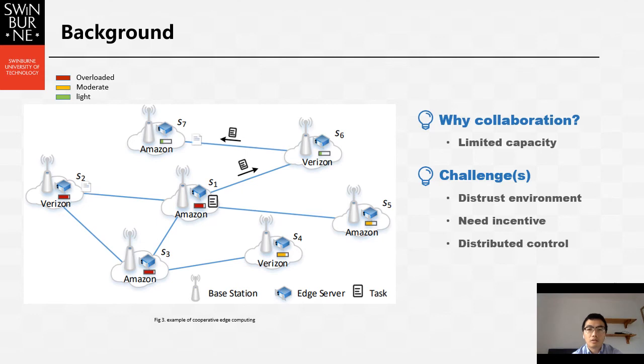Without proper incentive, they refuse to contribute their resources. In addition, they are in a distrust environment. If randomly offloading computation tasks to an edge server, the offloading task might not be completed on time. For example, let's assume S2 would like to perform offloading tasks. However, it may not finish tasks as required because it's already overloaded.